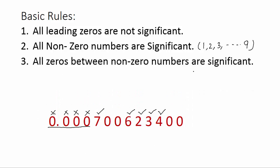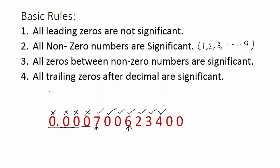Rule 3: all zeros between non-zero numbers are significant. You can see starting zeros are not significant, but if zeros are between non-zero numbers like between 7 and 6 here, there are 2 zeros — these 2 are significant. Rule 4: all trailing zeros after a decimal are significant. Trailing zeros means the zeros at the end of the number. Here you can see these 2 zeros are at the end of the number, so these are trailing zeros, and they are significant only if the number has a decimal. This number has a decimal, so these 2 zeros are significant.